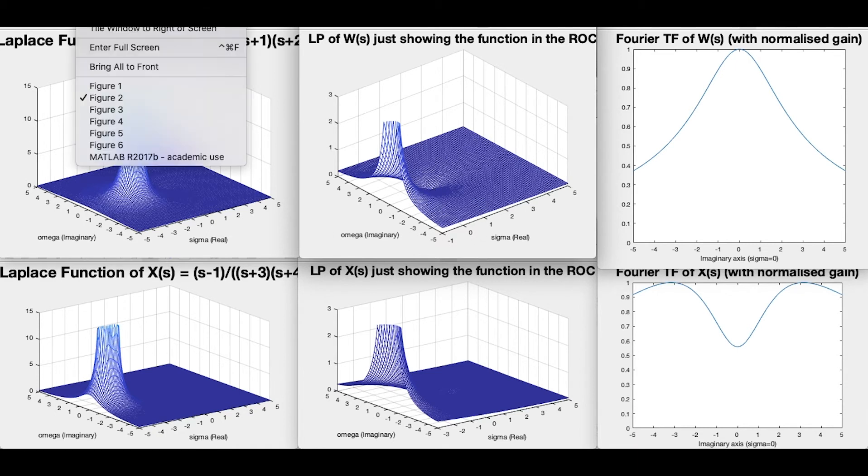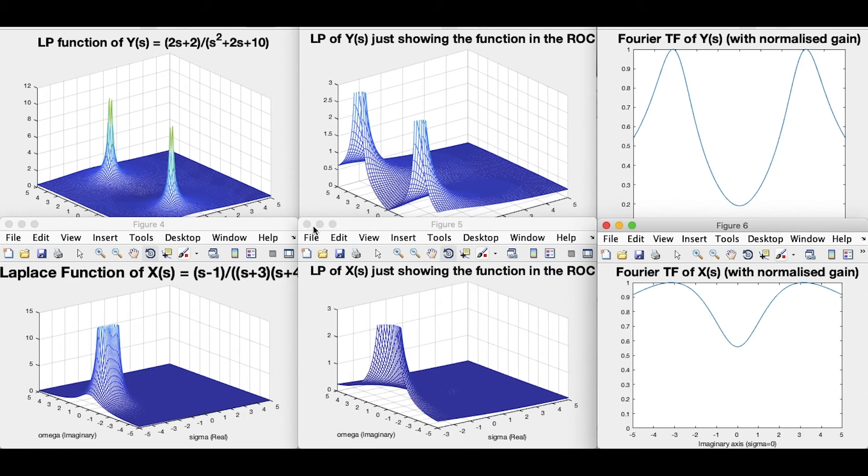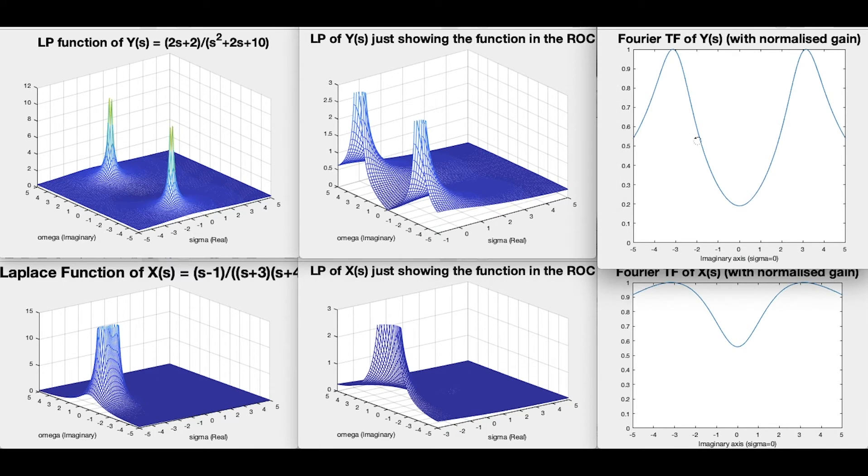Something else that I want to just show you is what happens when we have a different type of function. So this one here, we'll run here with this function here, this function now, which we're showing on the top. So the three on the bottom are the same as before, and now I'm showing three different plots along the top, where we've got a transfer function now, which has two poles and one zero. So the zero here is at s equals minus one.